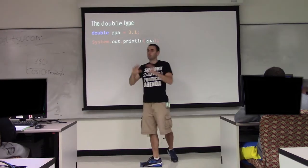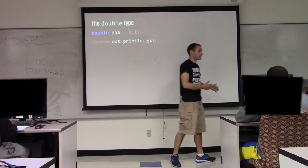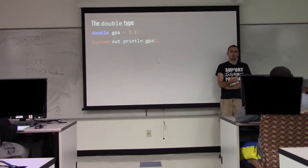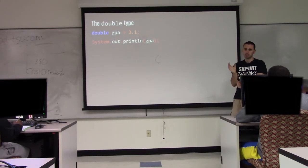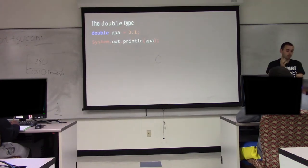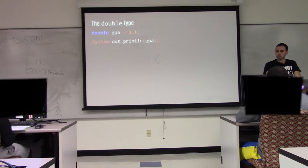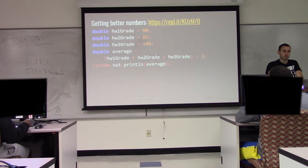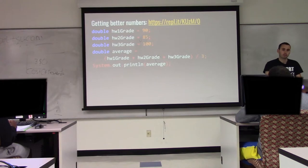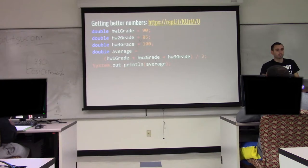We're also going to look at a new type today: double. More widely, anything like 3.1 — anything-point-anything — we refer to as floating points or floats. Double is short for double precision float. You might see float variables elsewhere; they're just more limited doubles. If you want to express decimal numbers, use doubles. We talked about integer division dropping remainders — that's not super useful for things like computing homework averages.